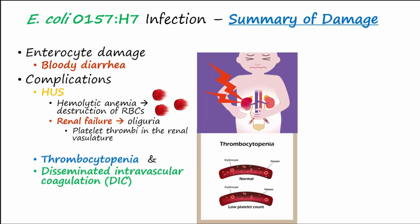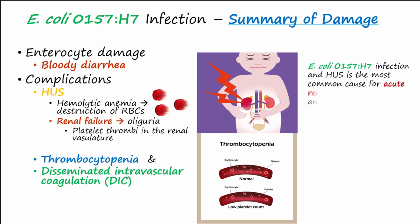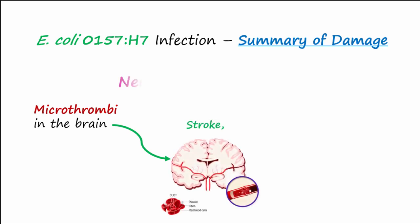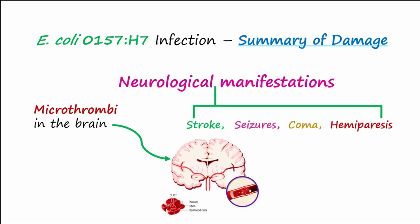E. coli O157:H7 infection with HUS is the most common cause of acute renal failure in children and has a mortality rate of 3 to 5 percent. Many that survive end up having permanent kidney damage. Microthrombi in the brain can also cut off blood supply and bring about neurological manifestations like strokes, seizures, coma, and hemiparesis, where the patient has muscle weakness on the left or right side of the body.